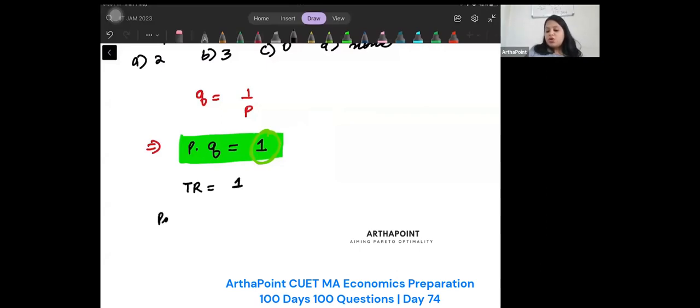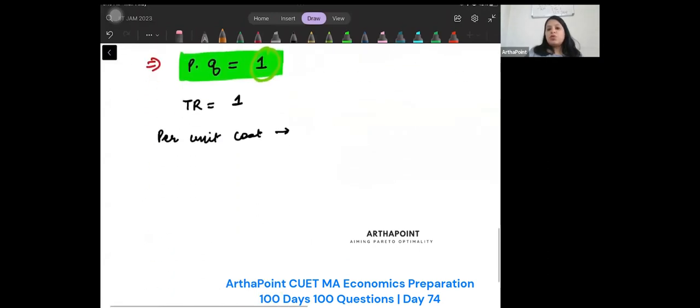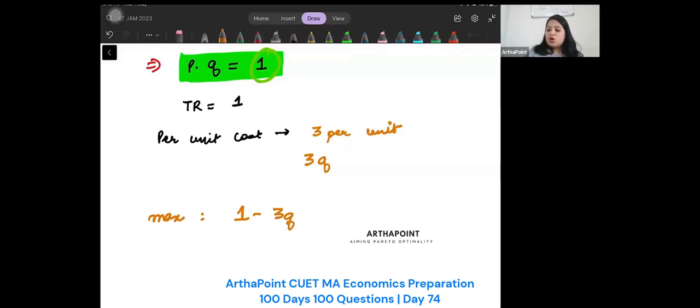And per unit cost, what is given to you? What is the per unit cost given? It incurs a cost of 3 per unit output. So 3 per unit, that is 3Q. So you have to maximize revenue minus cost. You have to maximize revenue minus cost.